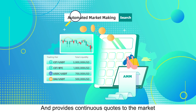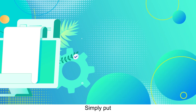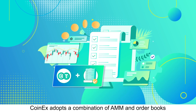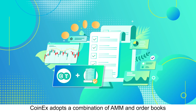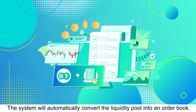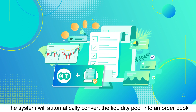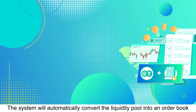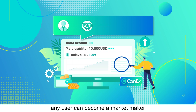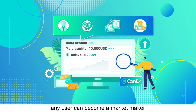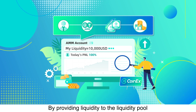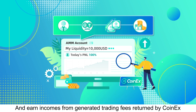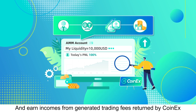Simply put, CoinEx adopts a combination of AMM and order books. The system will automatically convert the liquidity pool into an order book. On CoinEx, any user can become a market maker by providing liquidity to the liquidity pool and earn incomes from generated trading fees returned by CoinEx.